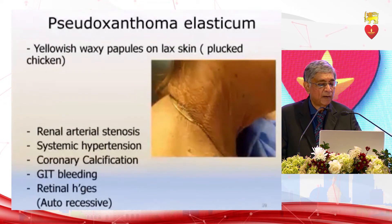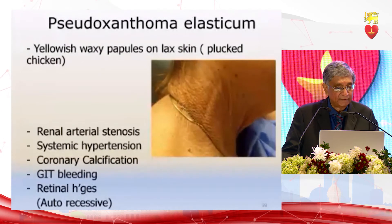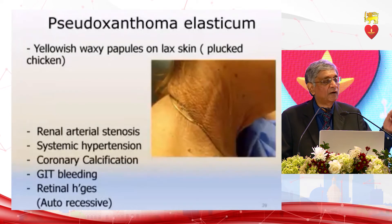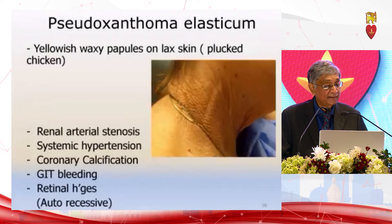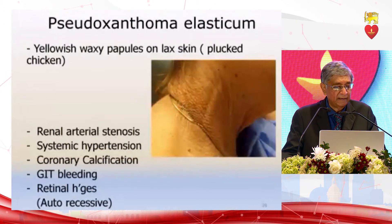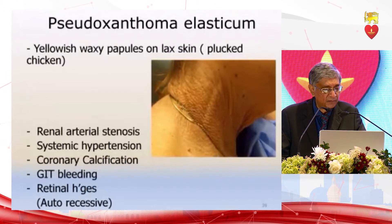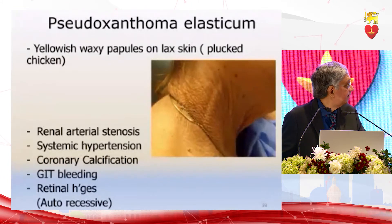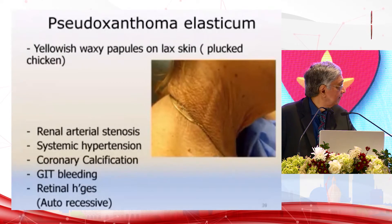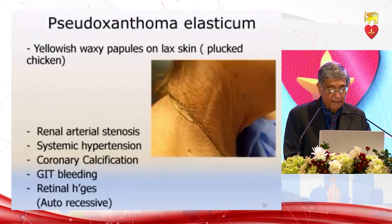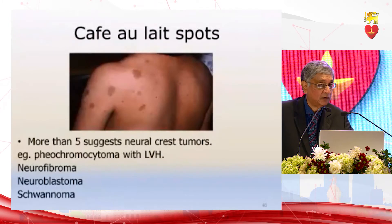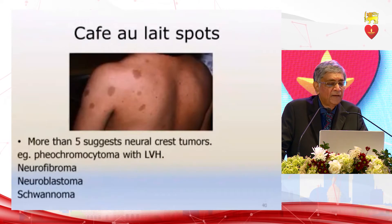Pseudoxanthoma elasticum — we have a few cases: yellowish waxy pebbles on the skin, looking like the skin of a plucked chicken. It is associated with a host of arterial conditions — renal artery stenosis, systemic hypertension, coronary calcification, gut arterial beading, and retinal hemorrhages. It is autosomal recessive and important to recognize.